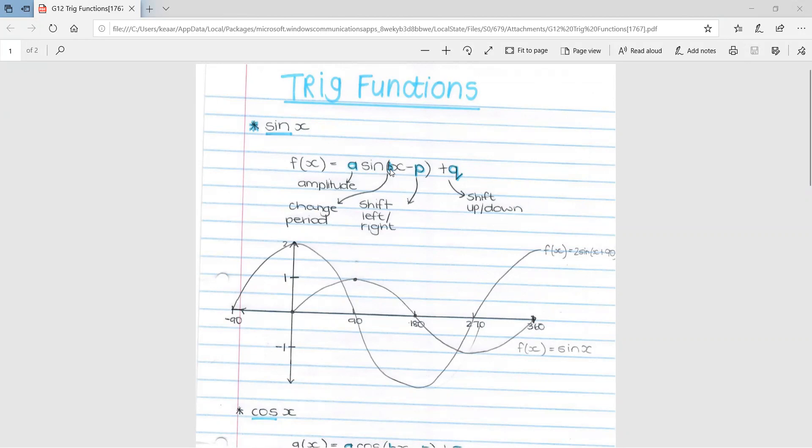With b in front of the x, that changes the period of the graph. The period is basically how many degrees it is for one full graph. So if you look at this sin graph, it goes until 360. It starts at zero, so its period is 360.